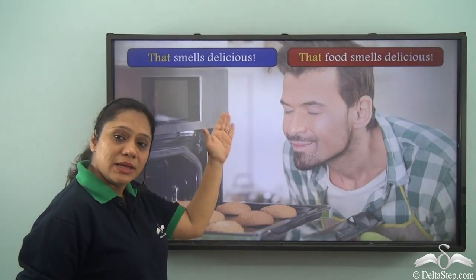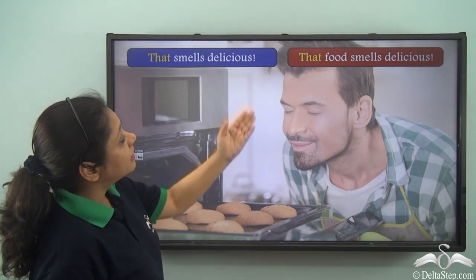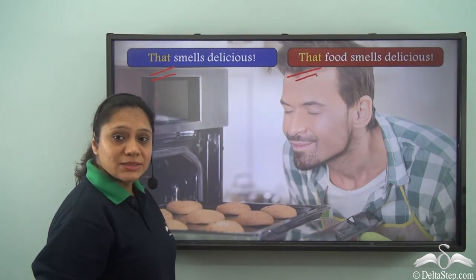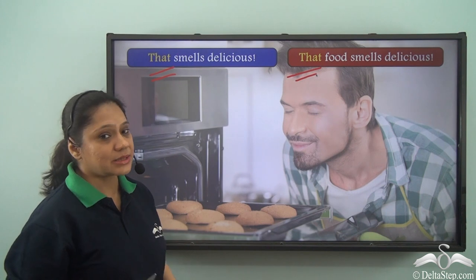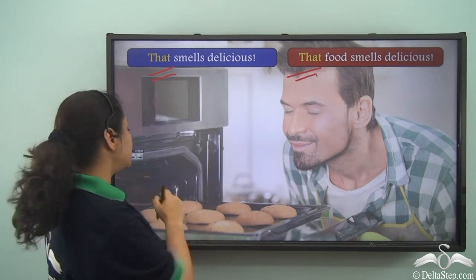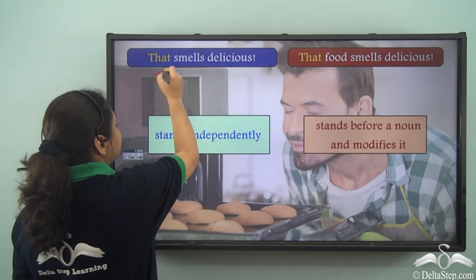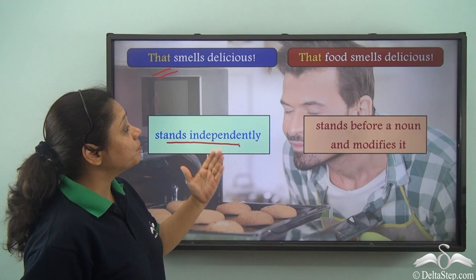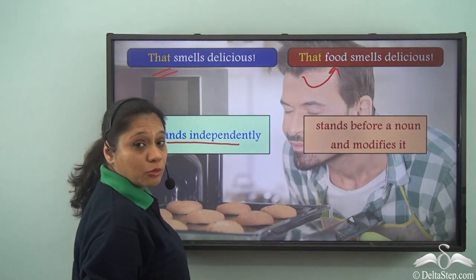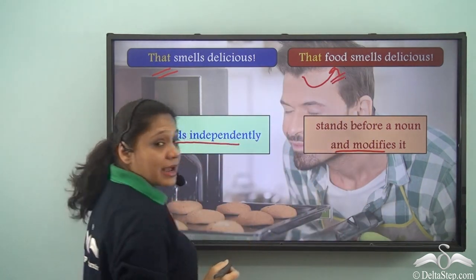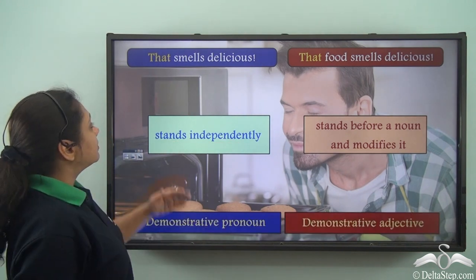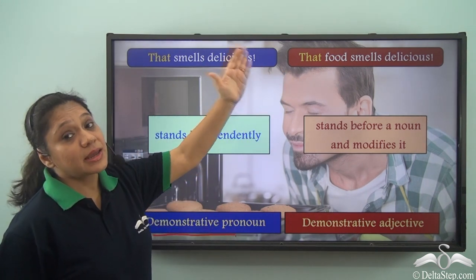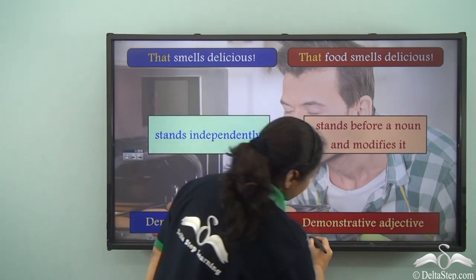Now let us read these two sentences: 'That smells delicious' and 'That food smells delicious.' Both use the word 'that,' so how is the usage different? In the first sentence, 'that smells delicious,' the word 'that' stands independently. In the second sentence, 'that food smells delicious,' the word 'that' stands before the noun 'food' and modifies it, telling us which particular food. Hence 'that' in the first sentence is a demonstrative pronoun, whereas in the second sentence it is a demonstrative adjective.